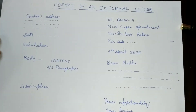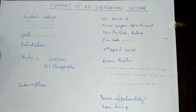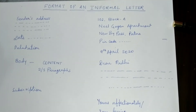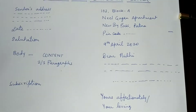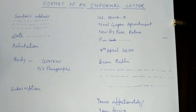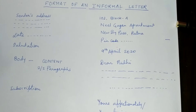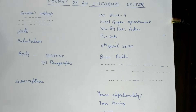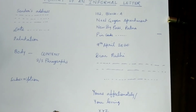Informal letters are letters that are written to persons with whom we have a personal relationship. We have direct contact with those persons. They are either our parents, uncle, aunt, other family members, relatives or friends. These people are very close to us and they are familiar.